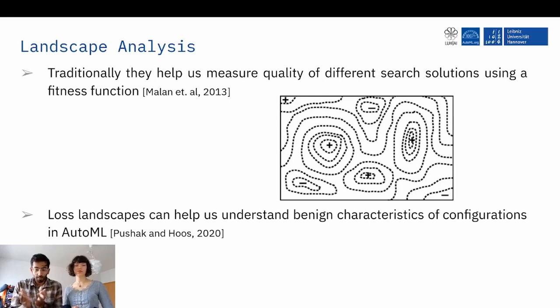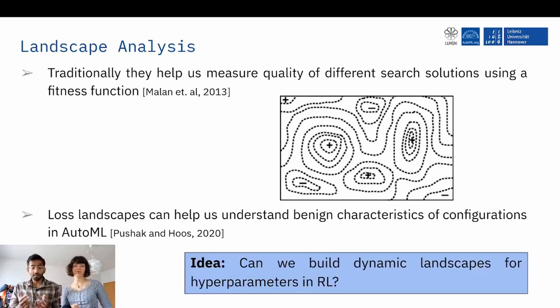And so we ask ourselves the question, naturally, can we build hyperparameter landscapes for reinforcement learning? Which are dynamic. Exactly.